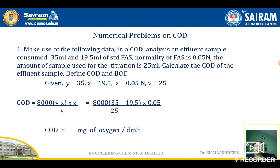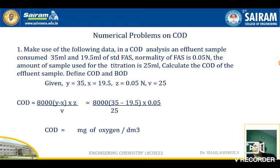Numerical problems on COD will be asked directly in the exam. For example: in a COD analysis, an effluent sample consumed 19.5 mL (back titration) and the blank consumed 35 mL; normality of FAS is 0.05N; wastewater volume is 25 mL — calculate the COD. Use the formula: COD = 8000 × (Y − X) × Z / 25, where Y is blank titration value, X is back titration value, and Z is normality of FAS. Substitute all known values to get the final answer.